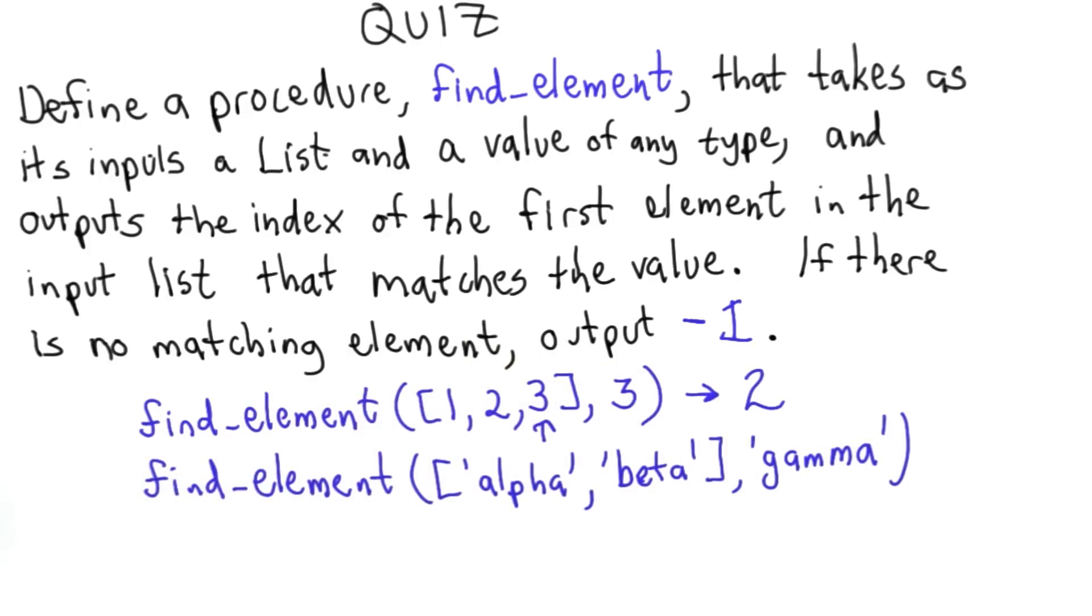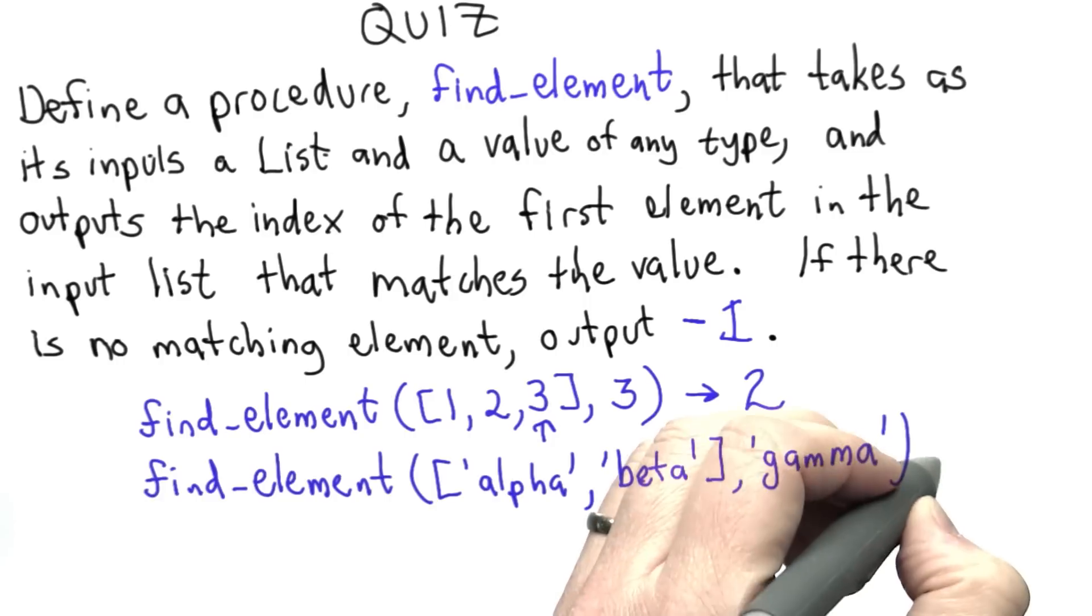If we pass in as the list the list containing the strings alpha and beta, and we pass in as the element to find the string gamma, there's no such element in the list, so the output should be negative 1.